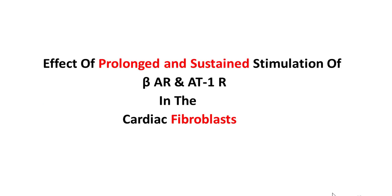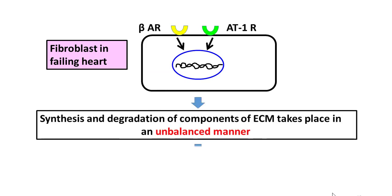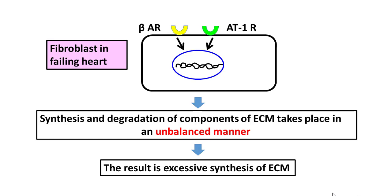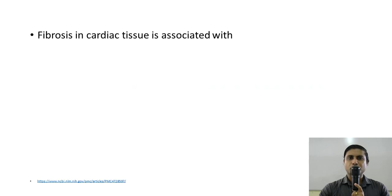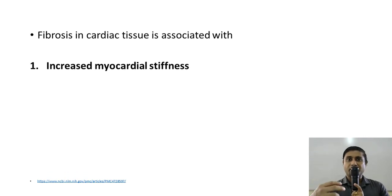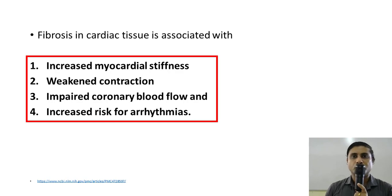When beta-adrenergic receptors and AT1 receptors on the fibroblast are stimulated in a prolonged and sustained manner, this balance is lost. There is an excessive synthesis of extracellular matrix. Excessive deposition of collagen and other extracellular matrix components in a tissue is, by definition, fibrosis. Fibrosis in cardiac tissue has devastating effects: myocardial stiffness increases, the contractility of the heart decreases, the perfusion of the heart decreases, and this heart becomes extremely prone to developing arrhythmias.